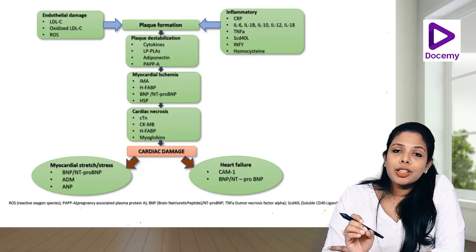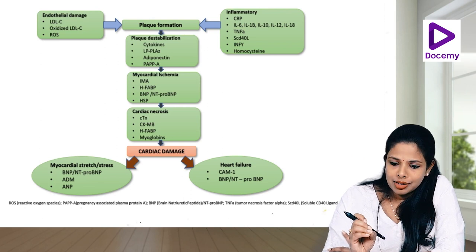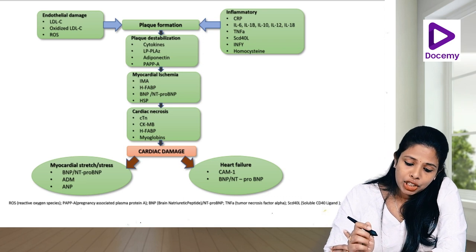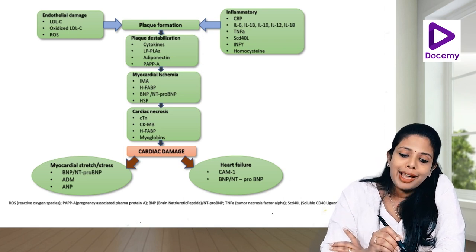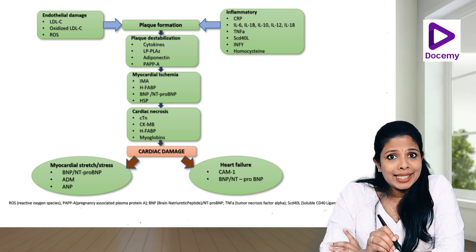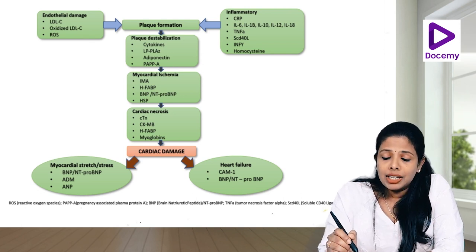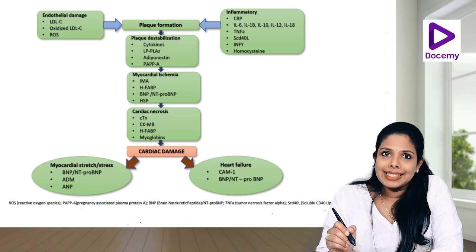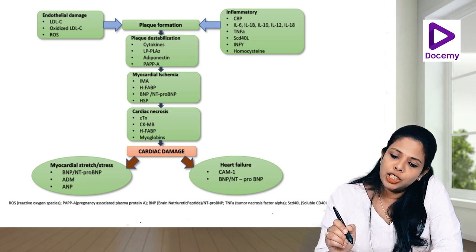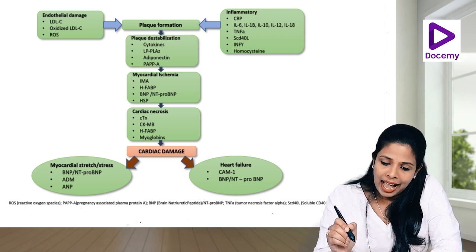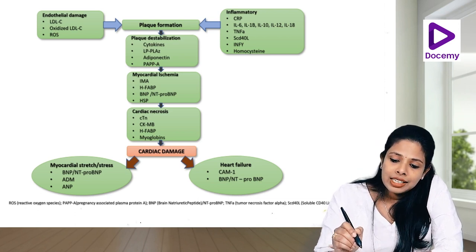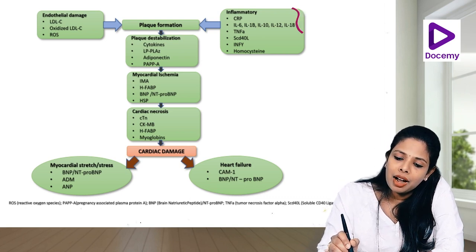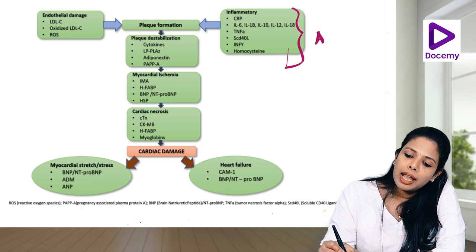Coming to the algorithm of how cardiac biomarkers are formed: whenever there is endothelial damage — usually caused by reactive oxygen species, LDL-C, oxidized LDL-C, and inflammatory damage — we see elevated inflammatory markers like CRP, IL-6, IL-8, IL-10, IL-12, IL-18, tumor necrosis factor-alpha, soluble CD40L, interferon gamma, and homocysteine. These are inflammatory markers associated with an acute MI.